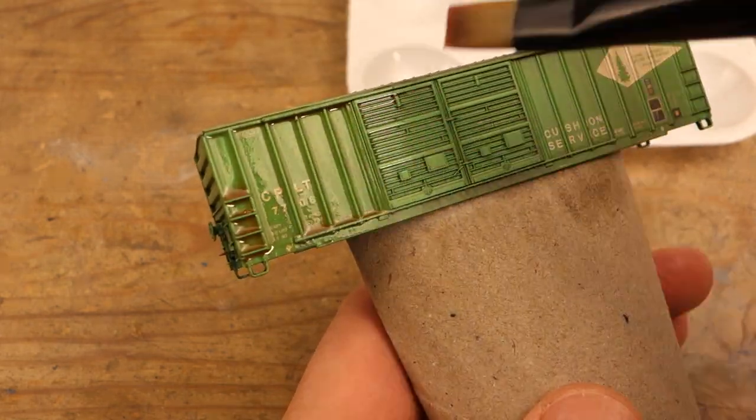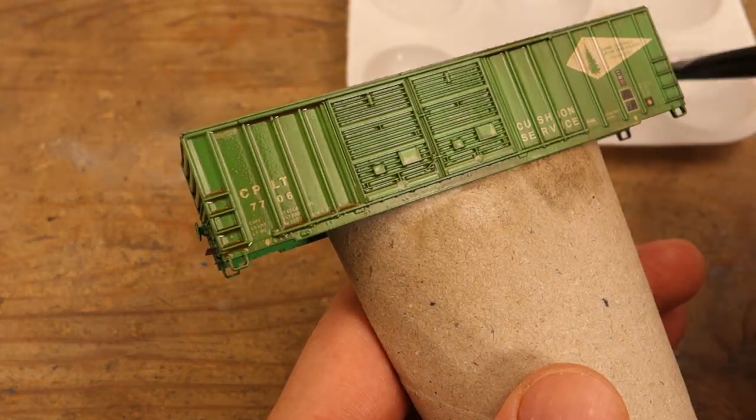I used a pretty thin mix of the burnt sienna wash and only applied it to the side and ends but not the roof.